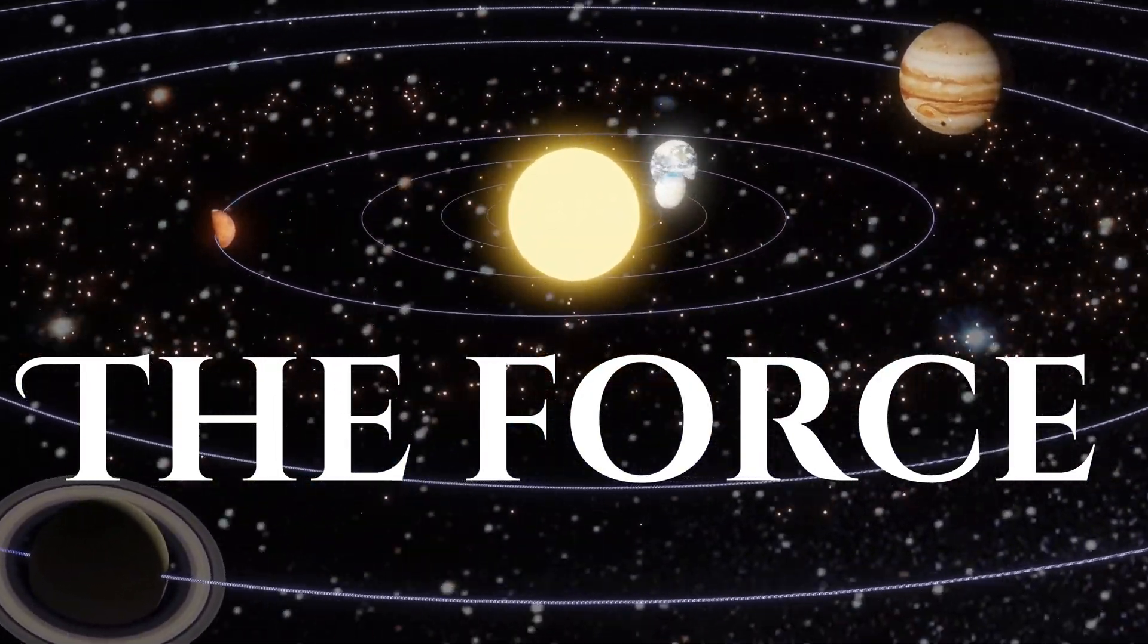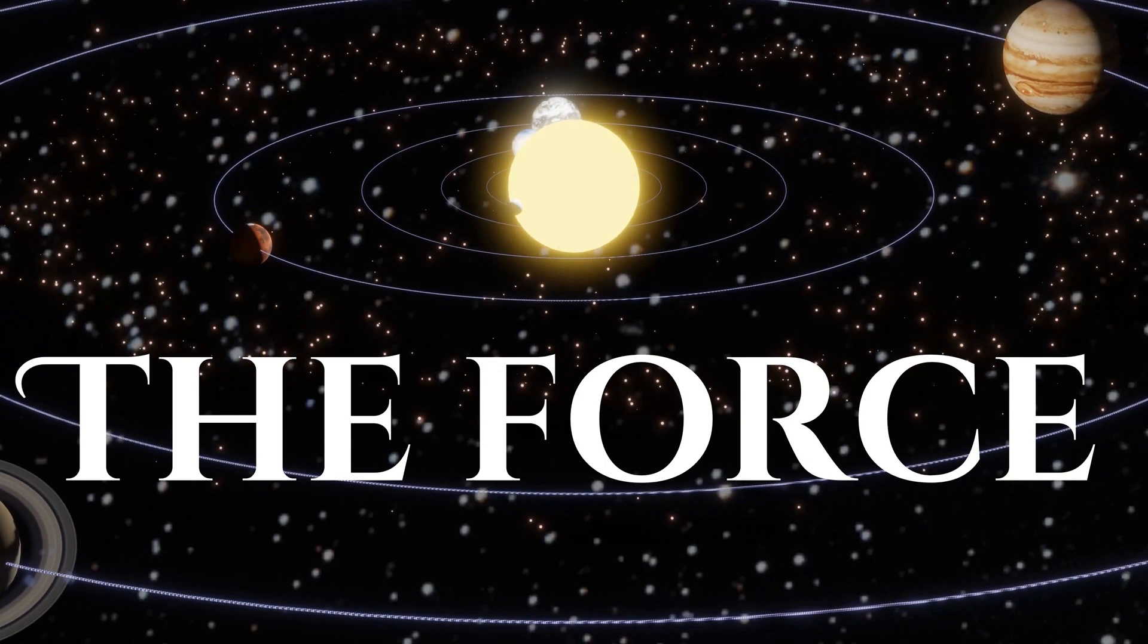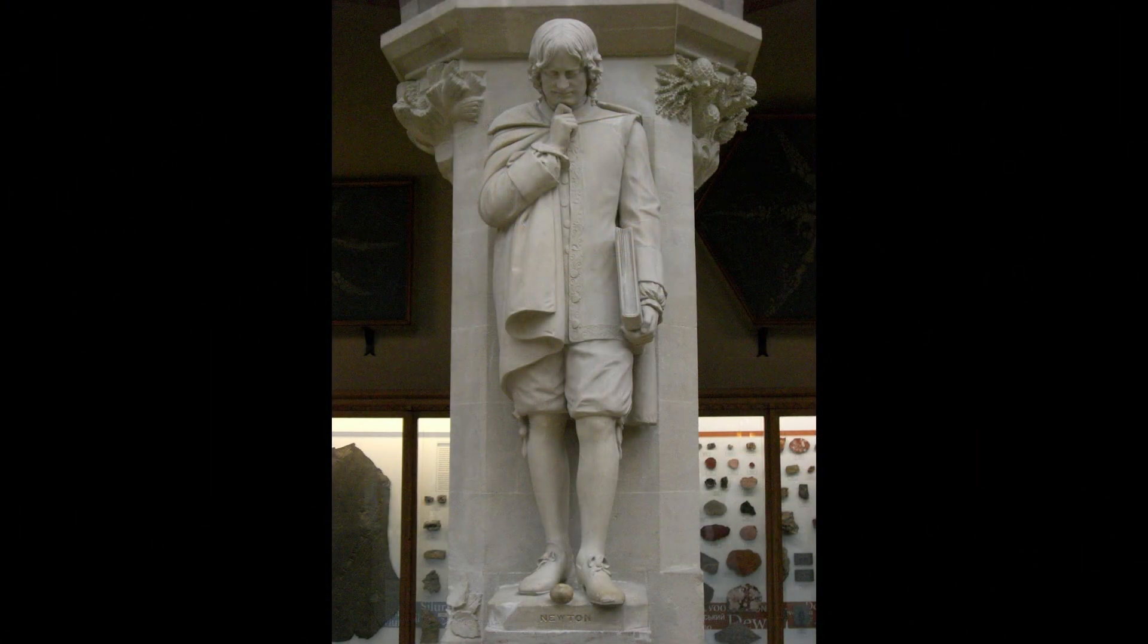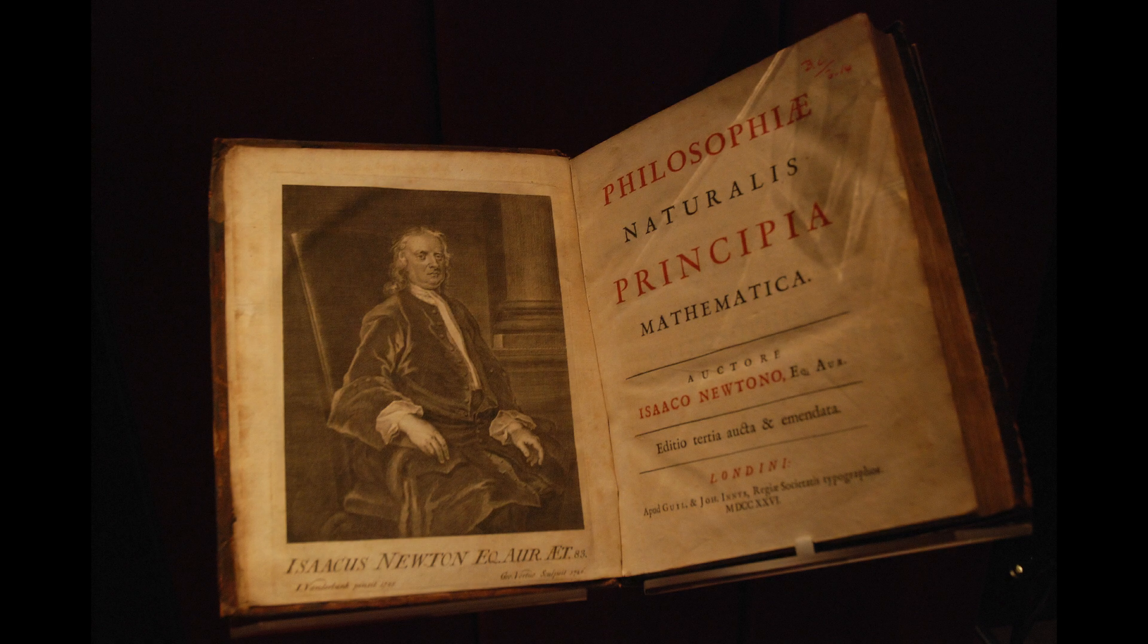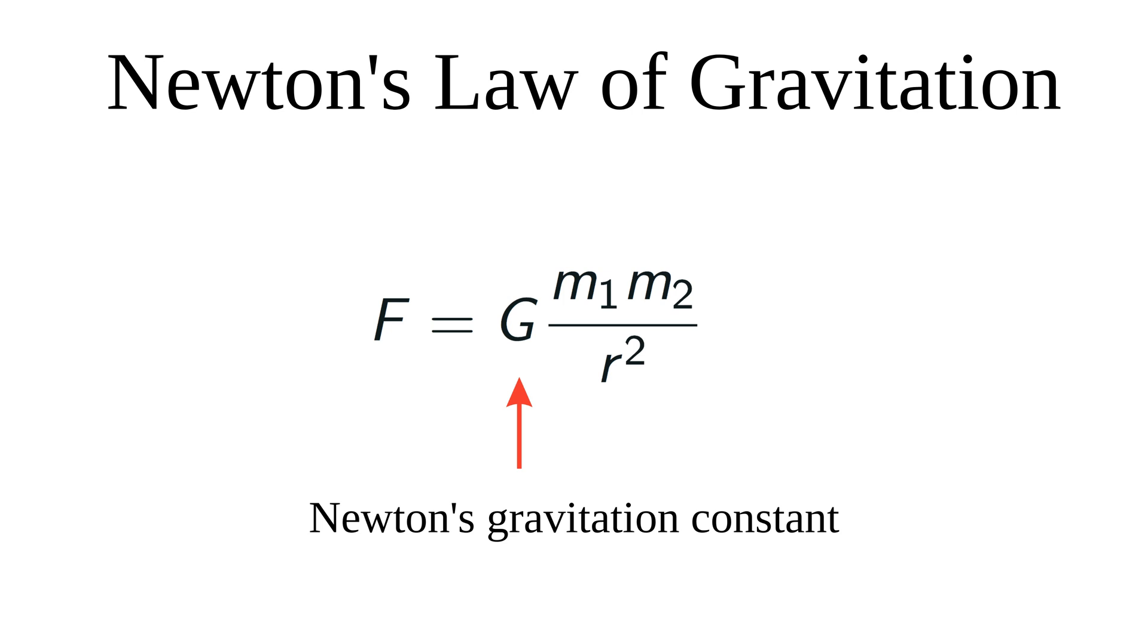We dive in to understand the force perspective of gravity. And here comes the man. Isaac Newton in his book Principia Mathematica expounded the law of gravitation. He says that the force of gravity between two objects of mass M1 and M2 is directly proportional to the product of their masses and inversely proportional to the square of the distance R between them.